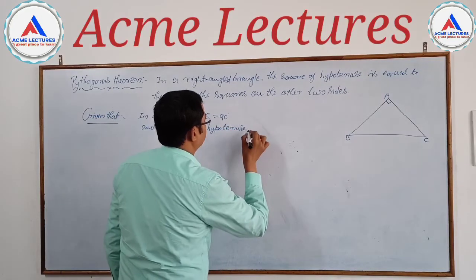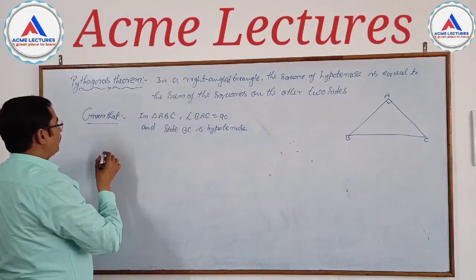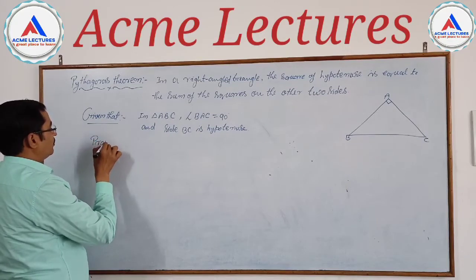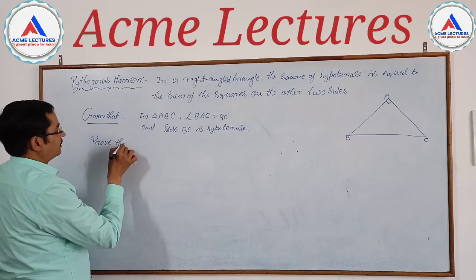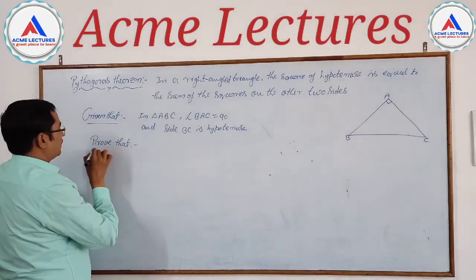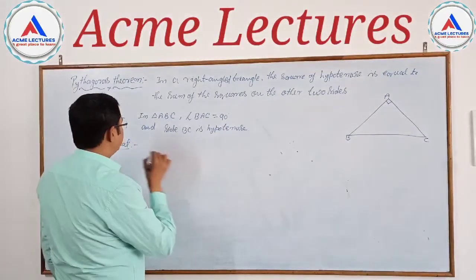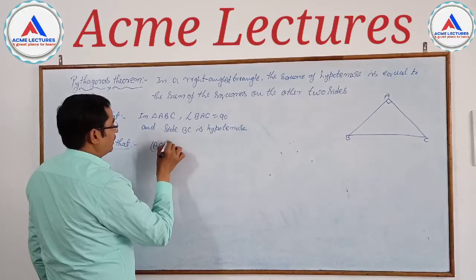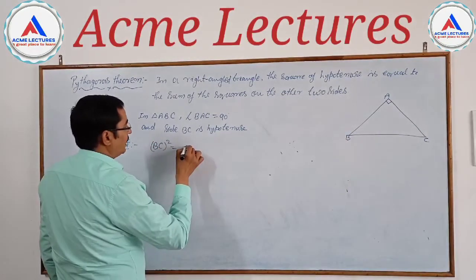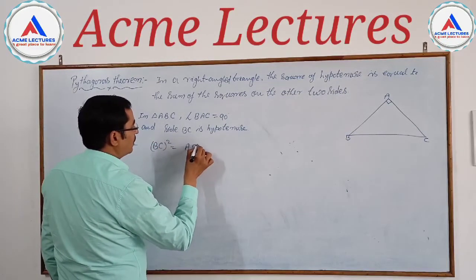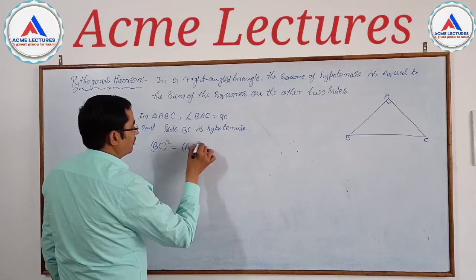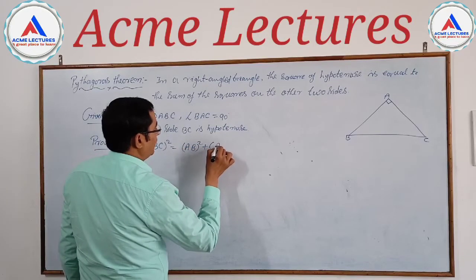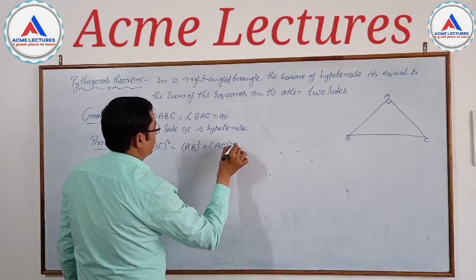To prove: side BC² = side AB² + side AC².